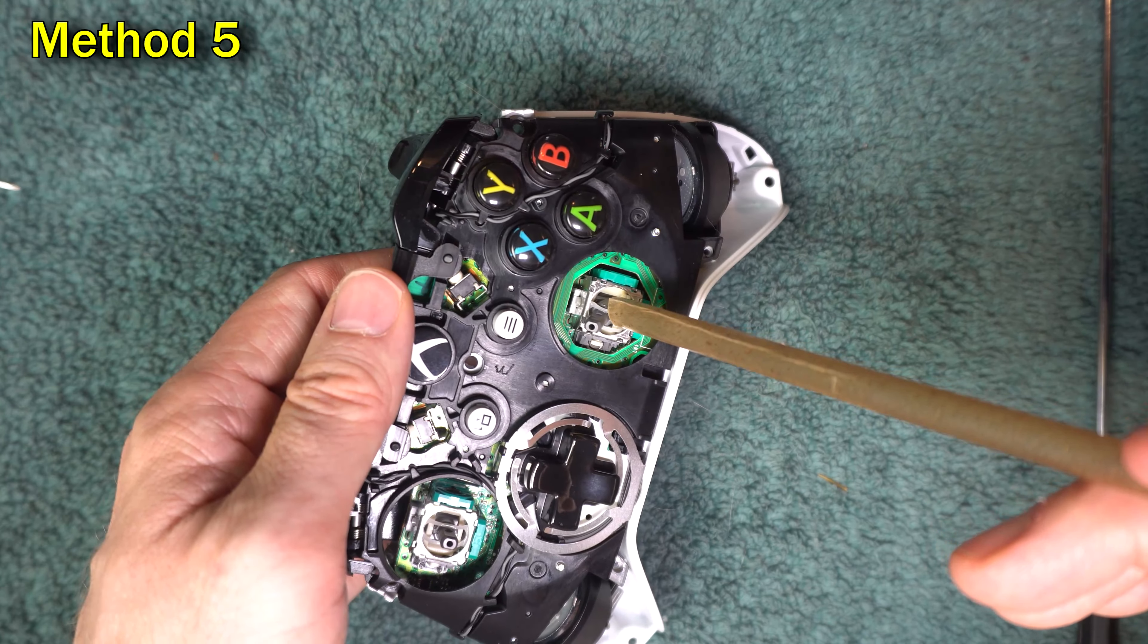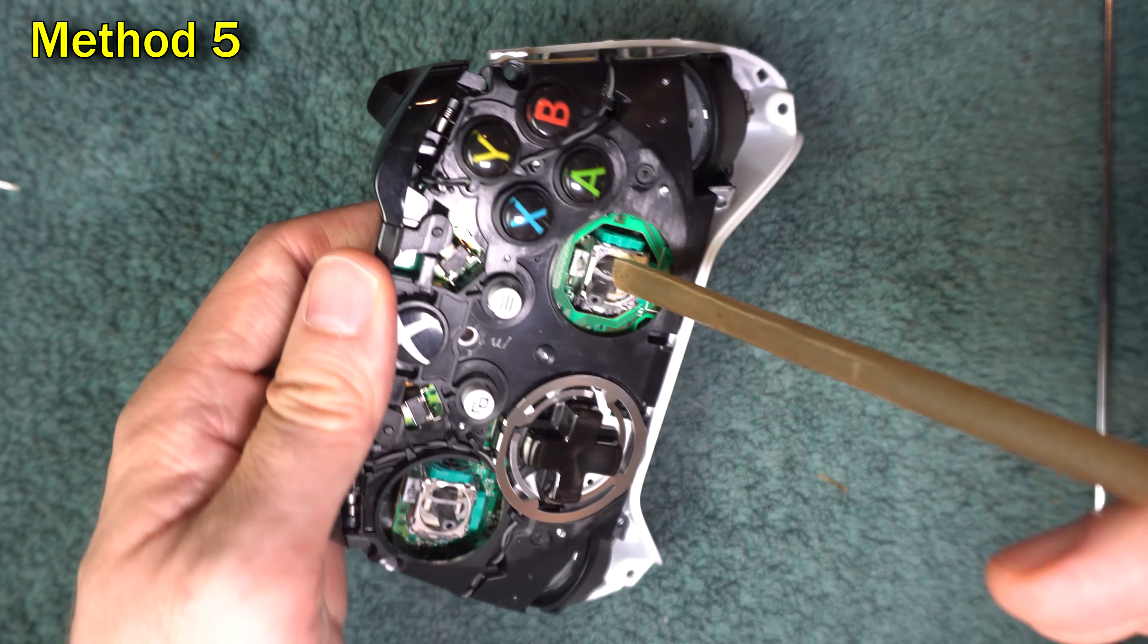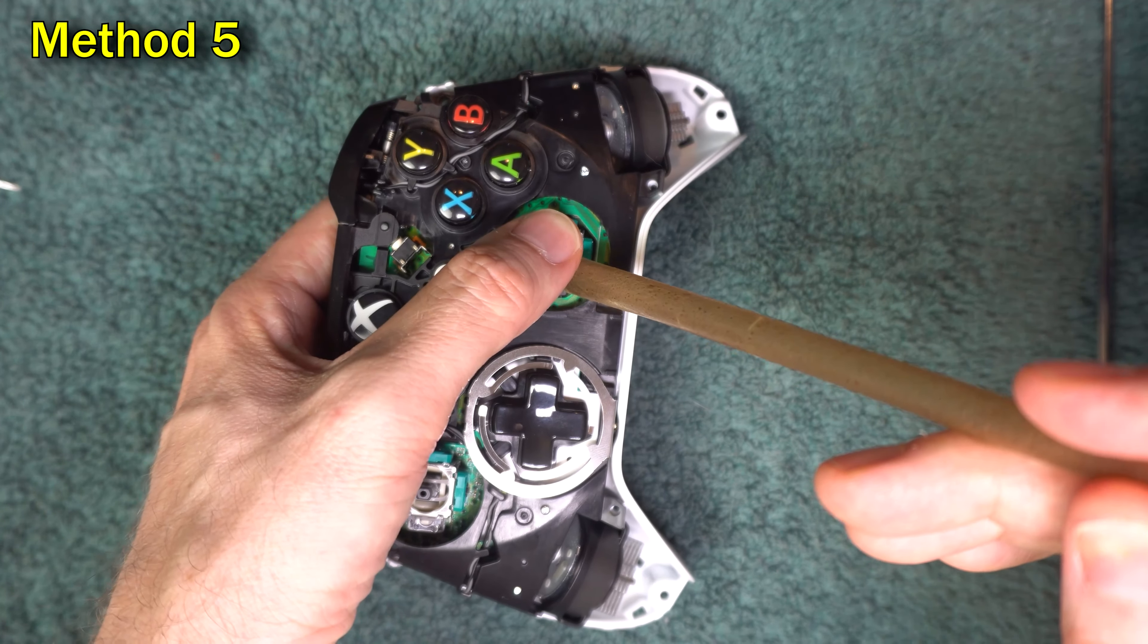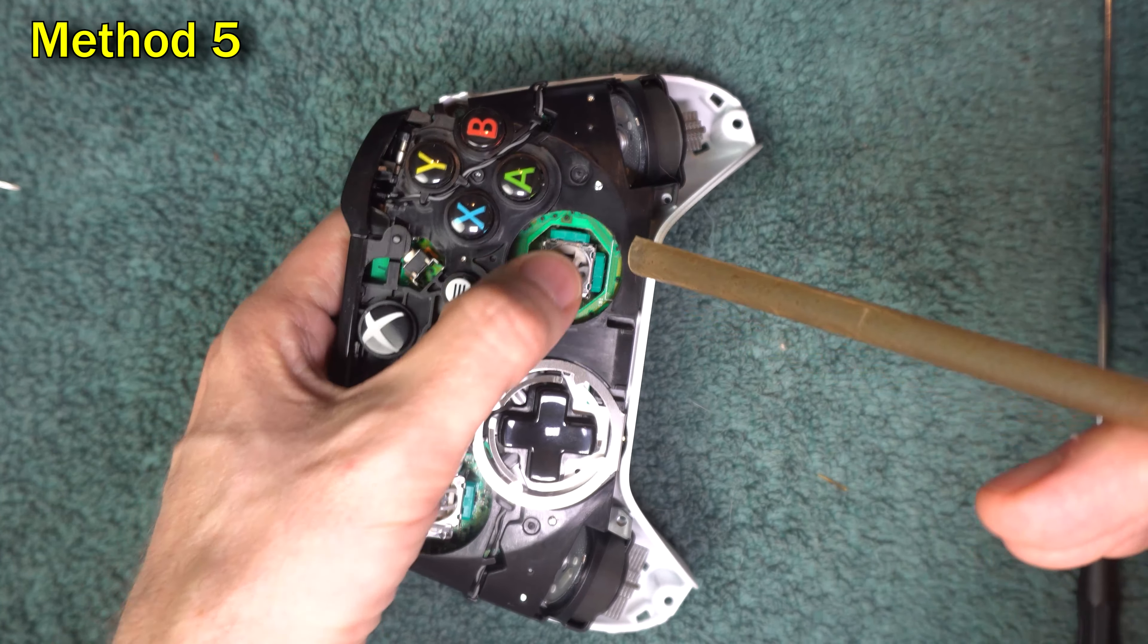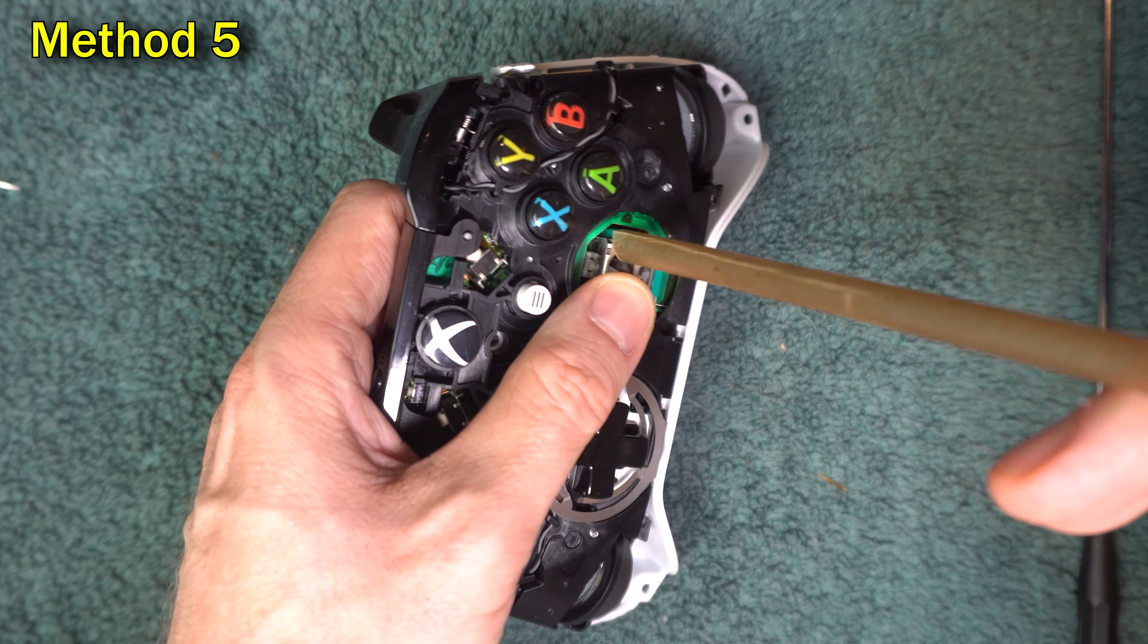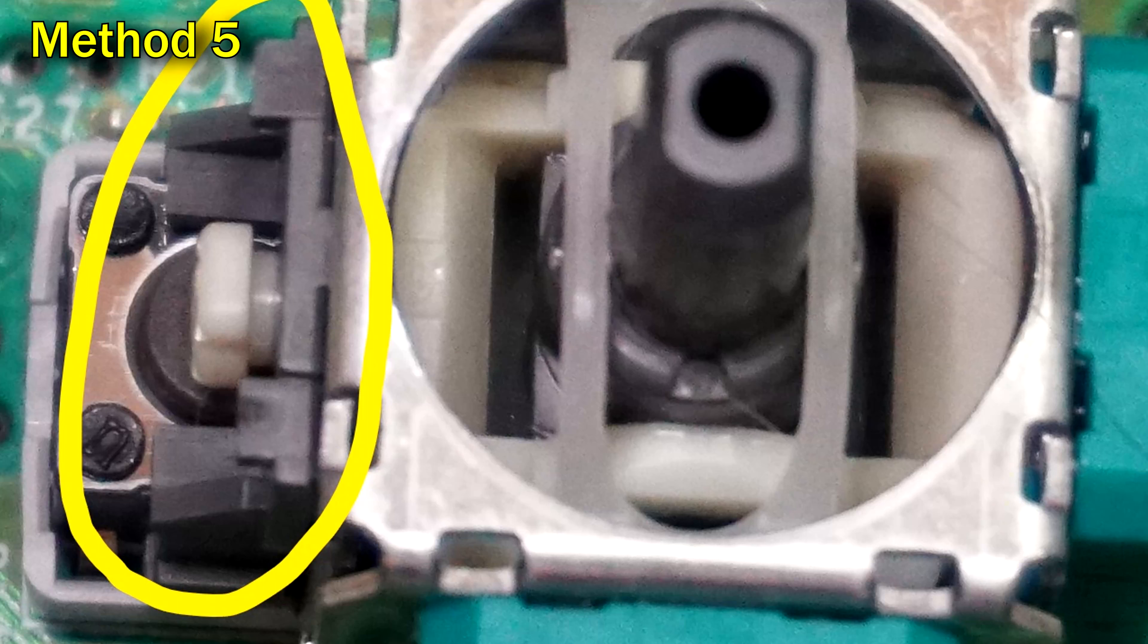Then blow into the stick with a straw, with canned air, or with your mouth directly. Make sure you also blow into the top of the green doors where those slits are at because debris gets trapped in those doors. And also make sure you blow this little gray tab over here.